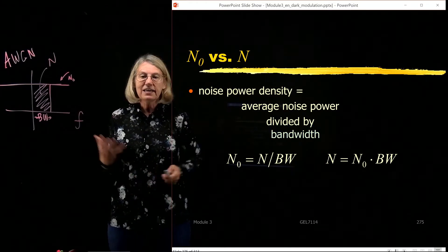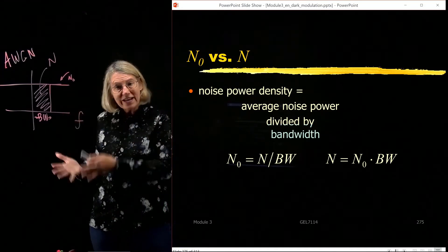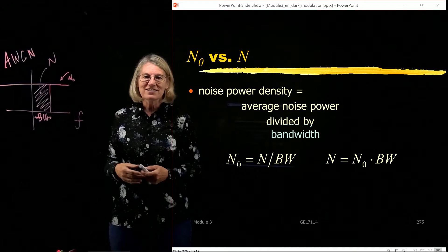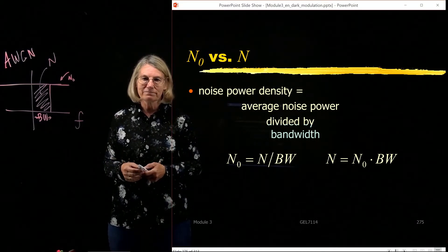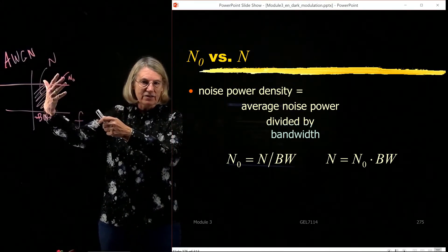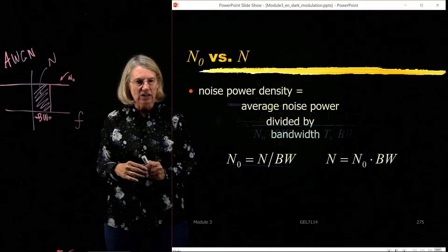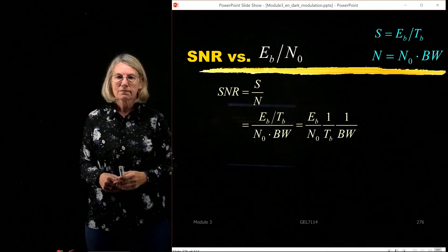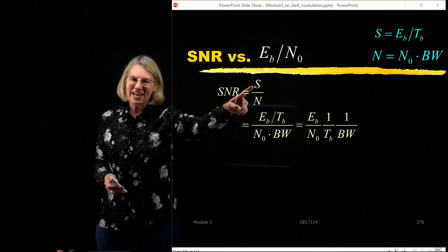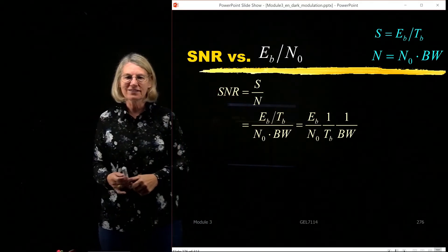The bandwidth is the key parameter relating N0 to N. Of course, my transition rate — which comes from Tb — and my occupied bandwidth are related to one another. This is how we see the transition from an arbitrary, not necessarily digital, into a digital communications system, and why we have these two different representations: standardized per bit, or the analog-type S. So SNR is S divided by N, and we have our two expressions for S and N relating to the digital domain. S is Eb over Tb, and N is N0 times the bandwidth.